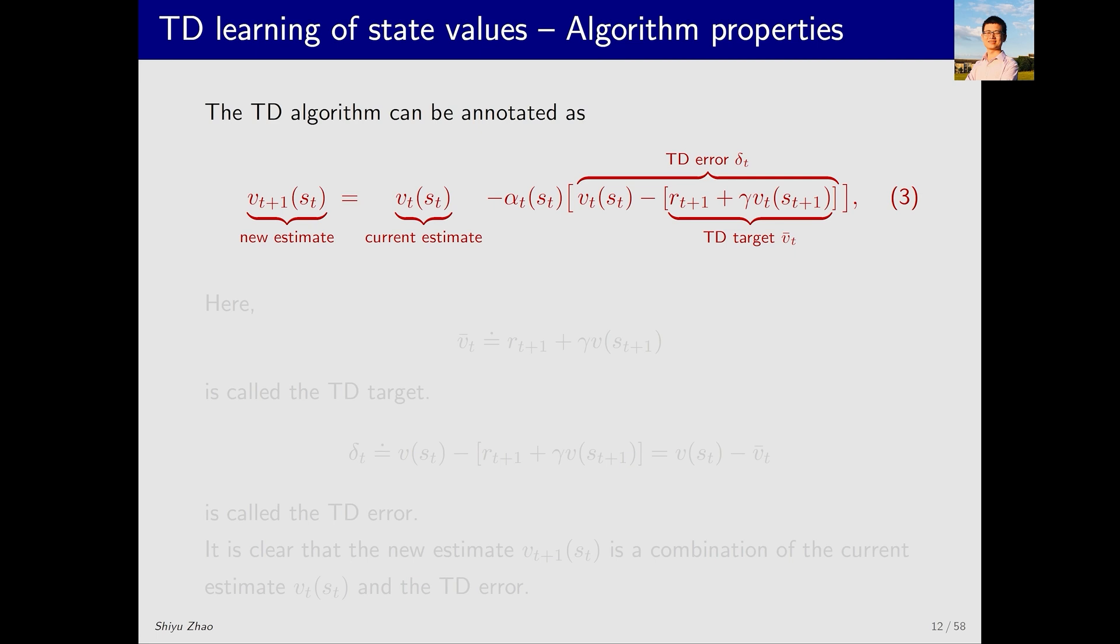For the first equation, I have added some annotations to make it clearer. First, on the left side is V_{t+1}. It is the new estimate of the V value for s_t. It equals the sum of two parts on the right side. The first part is the current estimate or the old estimate. Then, we add a correction term. In the correction term, alpha_t is a coefficient for s_t. In the brackets, there are several terms with specific names. Let me introduce them one by one.